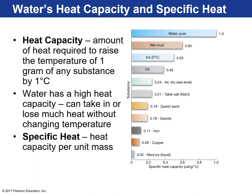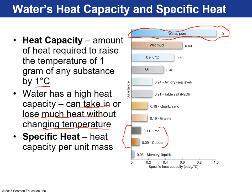Iron and copper don't have high heat capacity, so we use them as pots and pans — as soon as you apply heat, it moves through them and heats up quickly, cooking food fast. Another example: at the beach, sand heats up very quickly because quartz sand has a much lower heat capacity, potentially burning your feet. Ocean water, on the other hand, doesn't heat up as drastically because of water's high heat capacity — it remains mild. We also refer to this as specific heat.